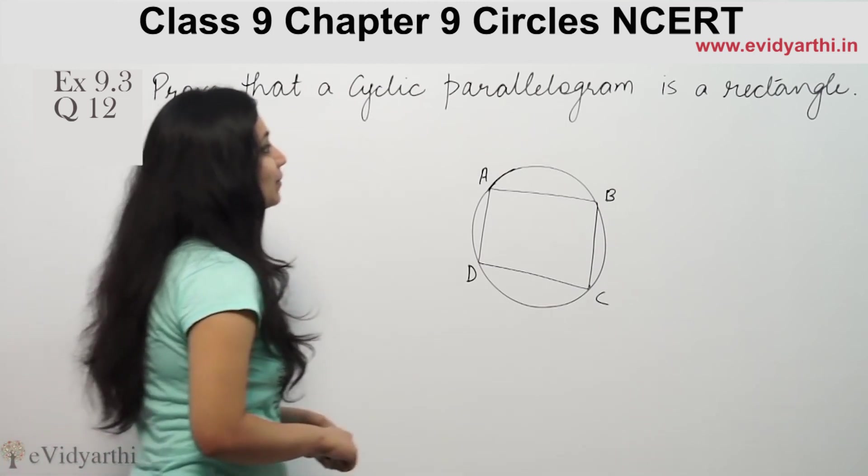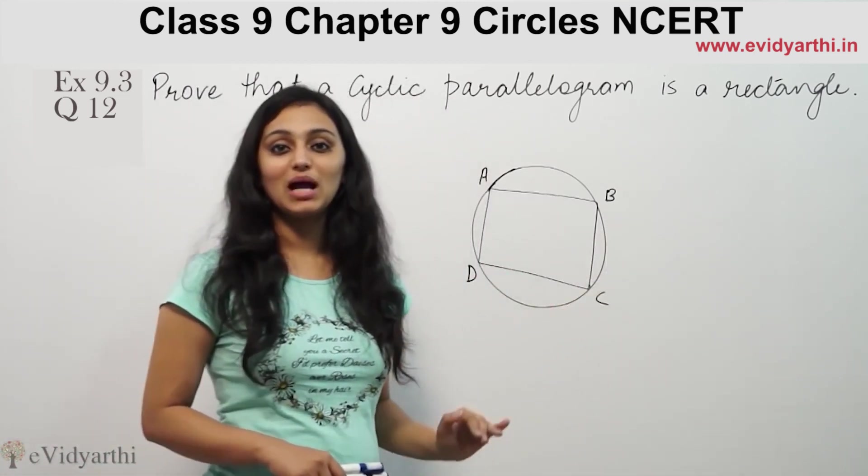This asks to prove that a cyclic parallelogram is a rectangle. So you have to prove that a cyclic parallelogram is a rectangle.